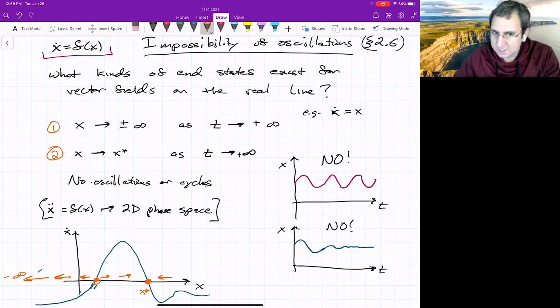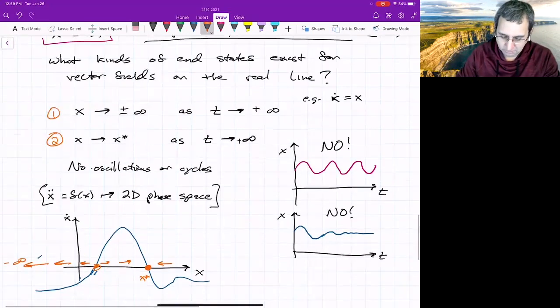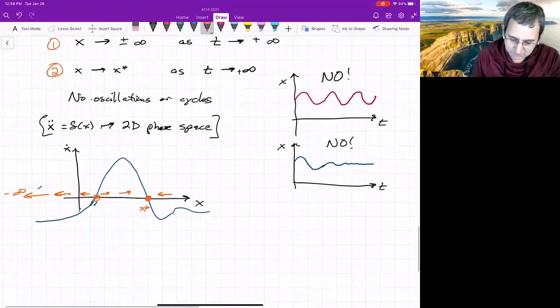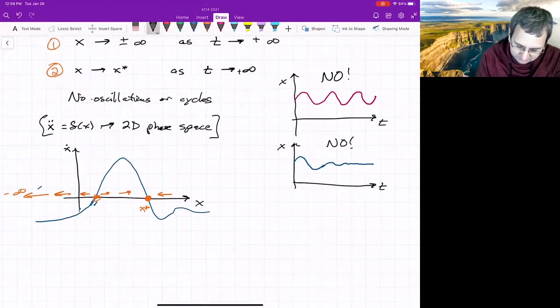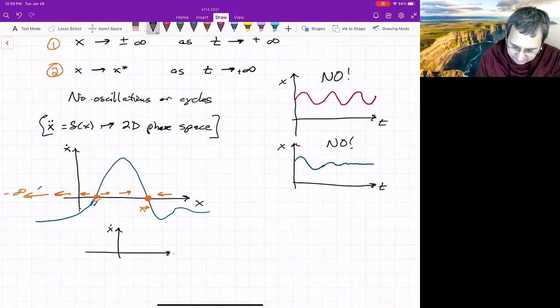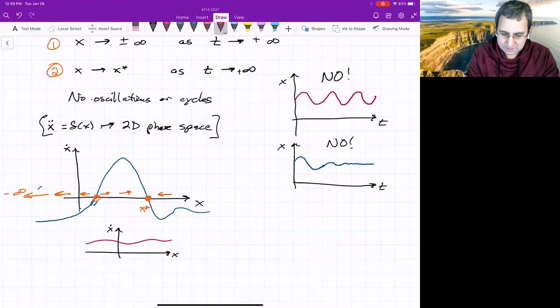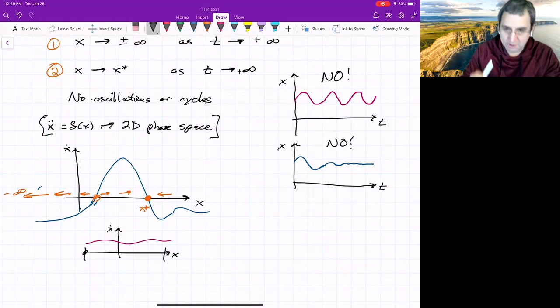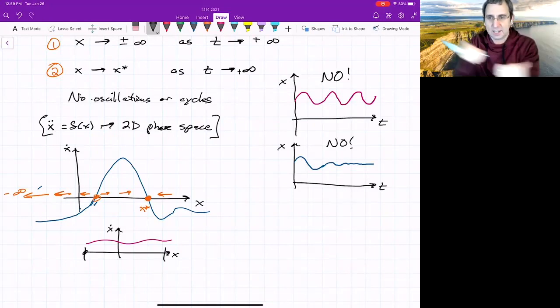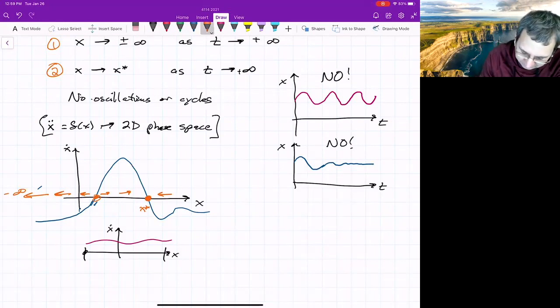Now it's important that x be part of the real line. Because I could kind of cheat. Suppose I've got my x dot versus x. And let's just say I have this always above x dot equals zero. But what if I cheat and I cut this here and here, I take the x-axis and I glue it together.